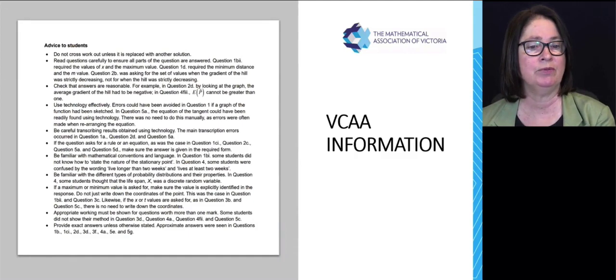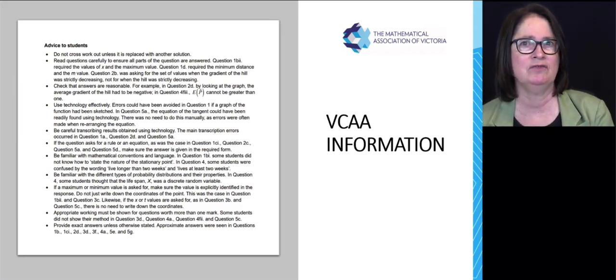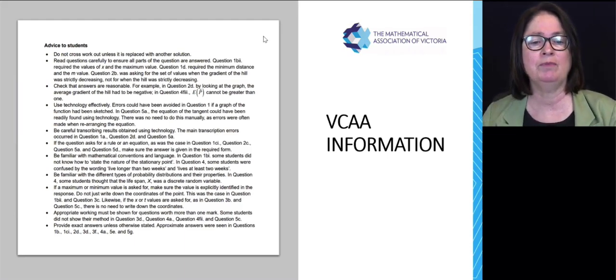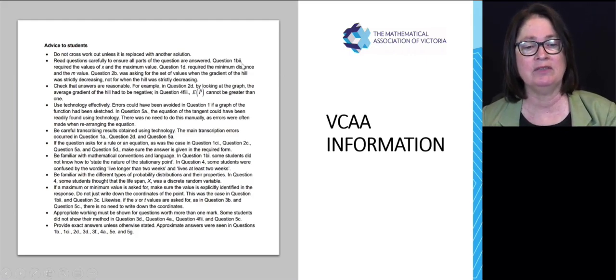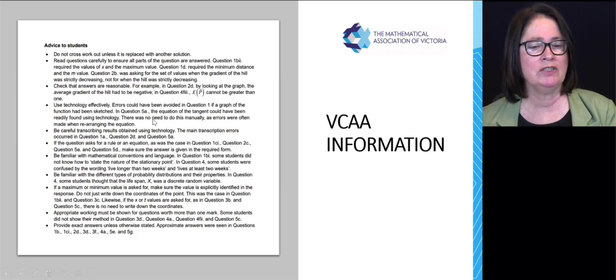So this is an example of one of my exam reports. Here you'll see, do not cross out work unless it is replaced with another section, because we've been instructed not to mark work that has been crossed out. So if you're going to write another solution, that's fine. But if you've got no intentions of doing that, it's best not to cross out the work. Read questions carefully to ensure all parts of the questions are answered. Check the answers are reasonable. If you can see that the gradient is positive and your answer is negative, then go back and check it and redo the question. Or if you've got a probability less than zero or greater than one, you know you've made a mistake.